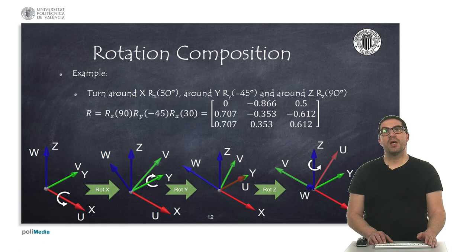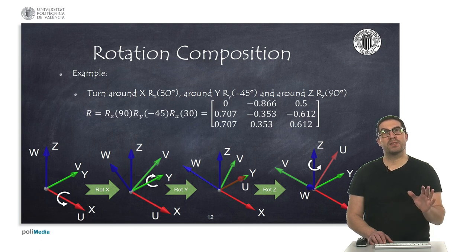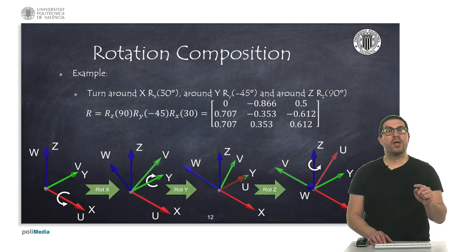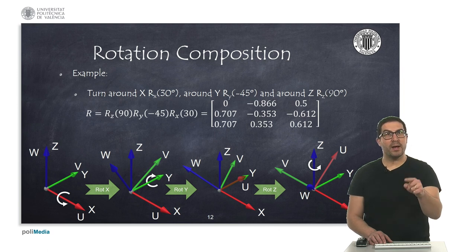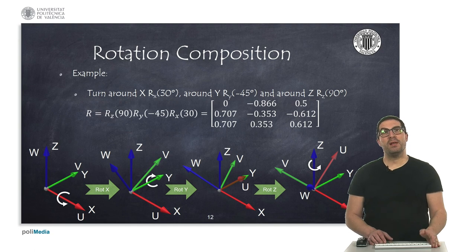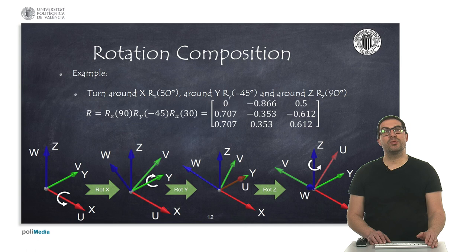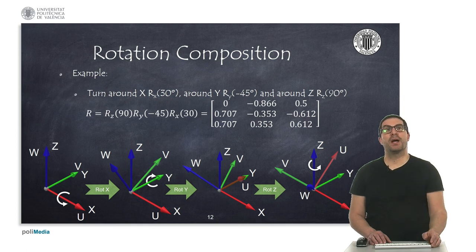Now we see an example of three consecutive rotations. The first one is around x, the second around y, and the third around the z-axis. Since the rotations are always applied with respect to the fixed reference frame, the order of operations must be applied in the opposite way from how they were defined — because we are pre-multiplying each basic rotation. As shown in the expression, we have Rz, Ry, and Rx. For these numerical values, we can see the final result, which corresponds to the coordinates of the u, v, and w axes of the mobile frame once rotated with these angles.